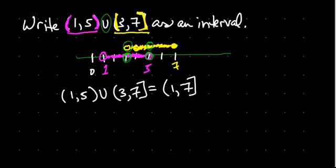That's closed on the 7 side. Okay, let's do a second one, let's do a second problem just like that, and let's do the intersection.